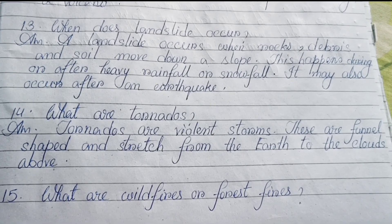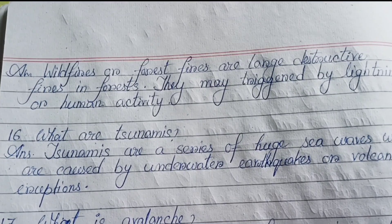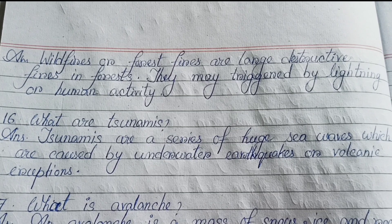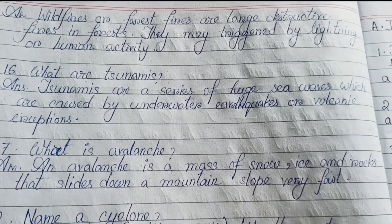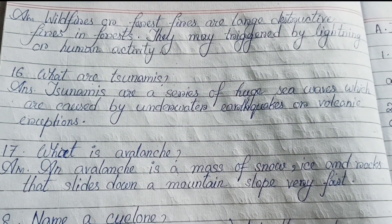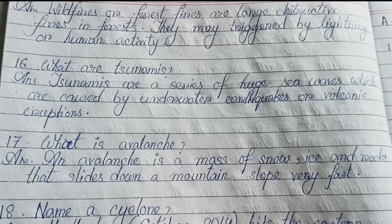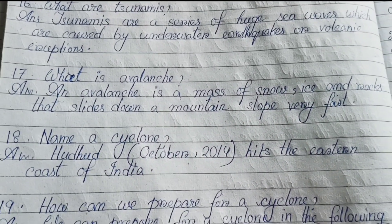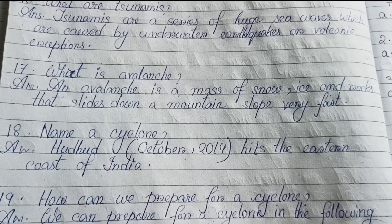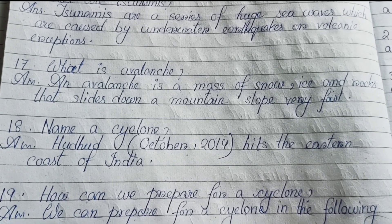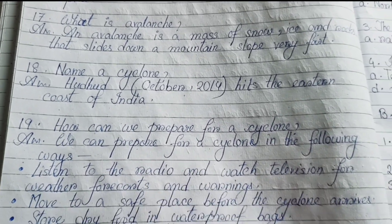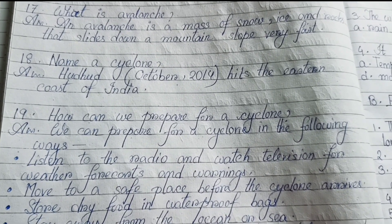Number fifteen: What are wildfires or forest fires? Wildfires or forest fires are large destructive fires in forests. They may be triggered by lightning or human activity. Number sixteen: What are tsunamis? Tsunamis are a series of huge sea waves caused by underwater earthquakes or volcanic eruptions. Number seventeen: What is an avalanche? An avalanche is a mass of snow, ice, and rocks that slides down a mountain slope very fast. Number eighteen: Name a cyclone — Hudhud, October 2014, which hit the eastern coast of India.